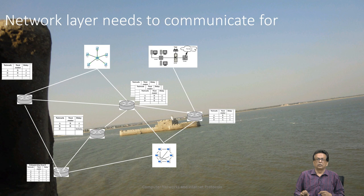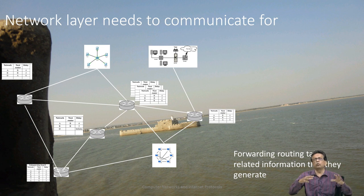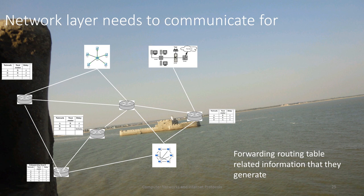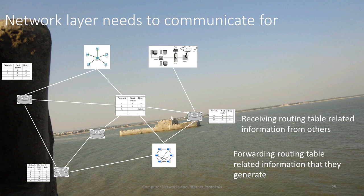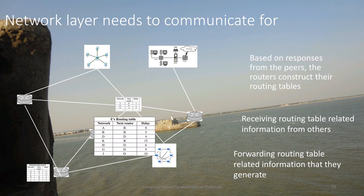What does the network layer need to do? The network layer needs to communicate — first thing: forwarding and routing table related information. The routing table tells us who is where. One method is to exchange that information with all your neighbors, which is called the distance vector protocol. A particular router sends its routing information to all of its neighbors; neighbors send back their routing tables, and once received from all three neighbors, the router can construct its own routing table. Once that is done, it can do the second part: forwarding — looking at this routing table to decide where the incoming packet is to be sent.